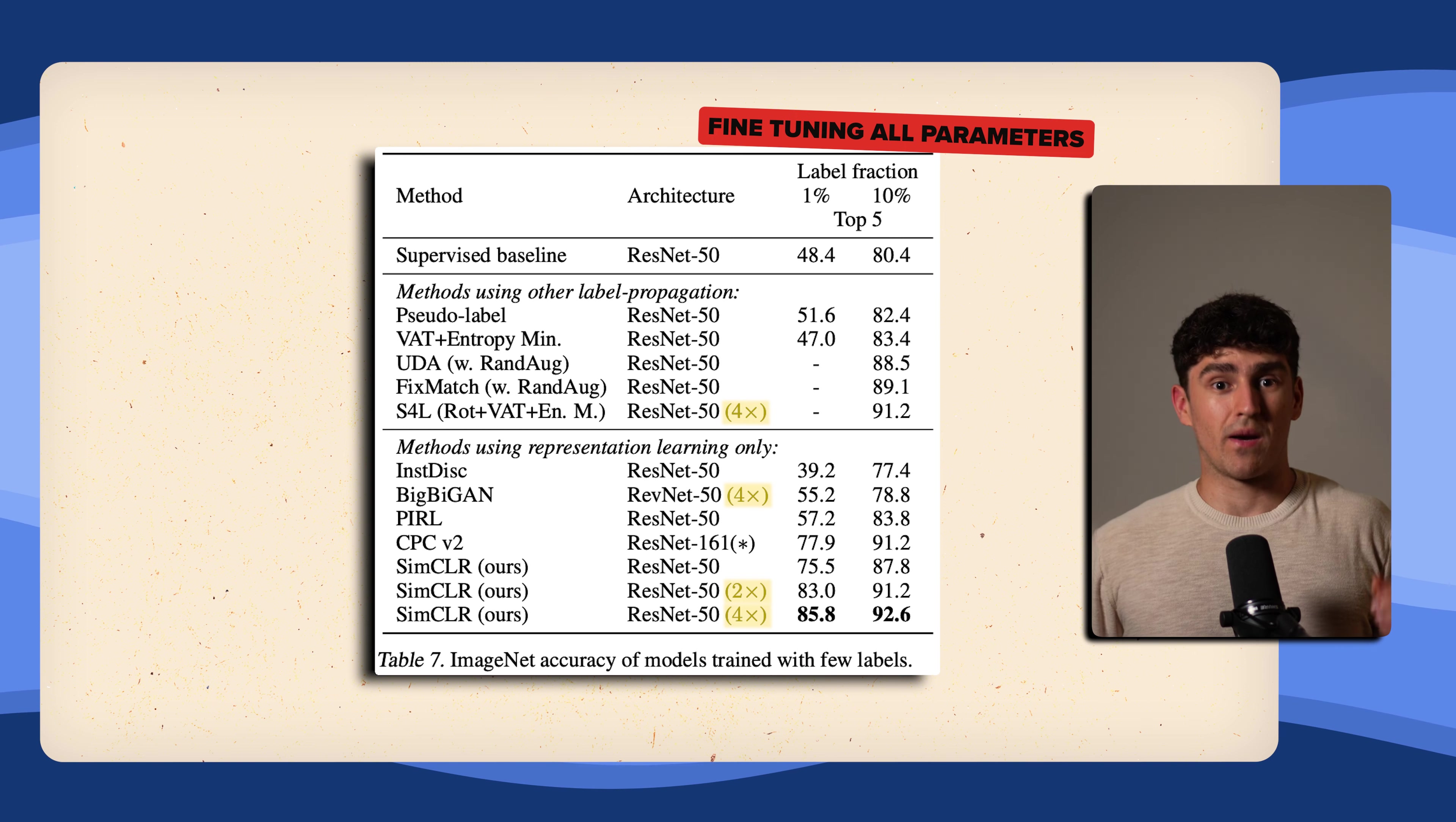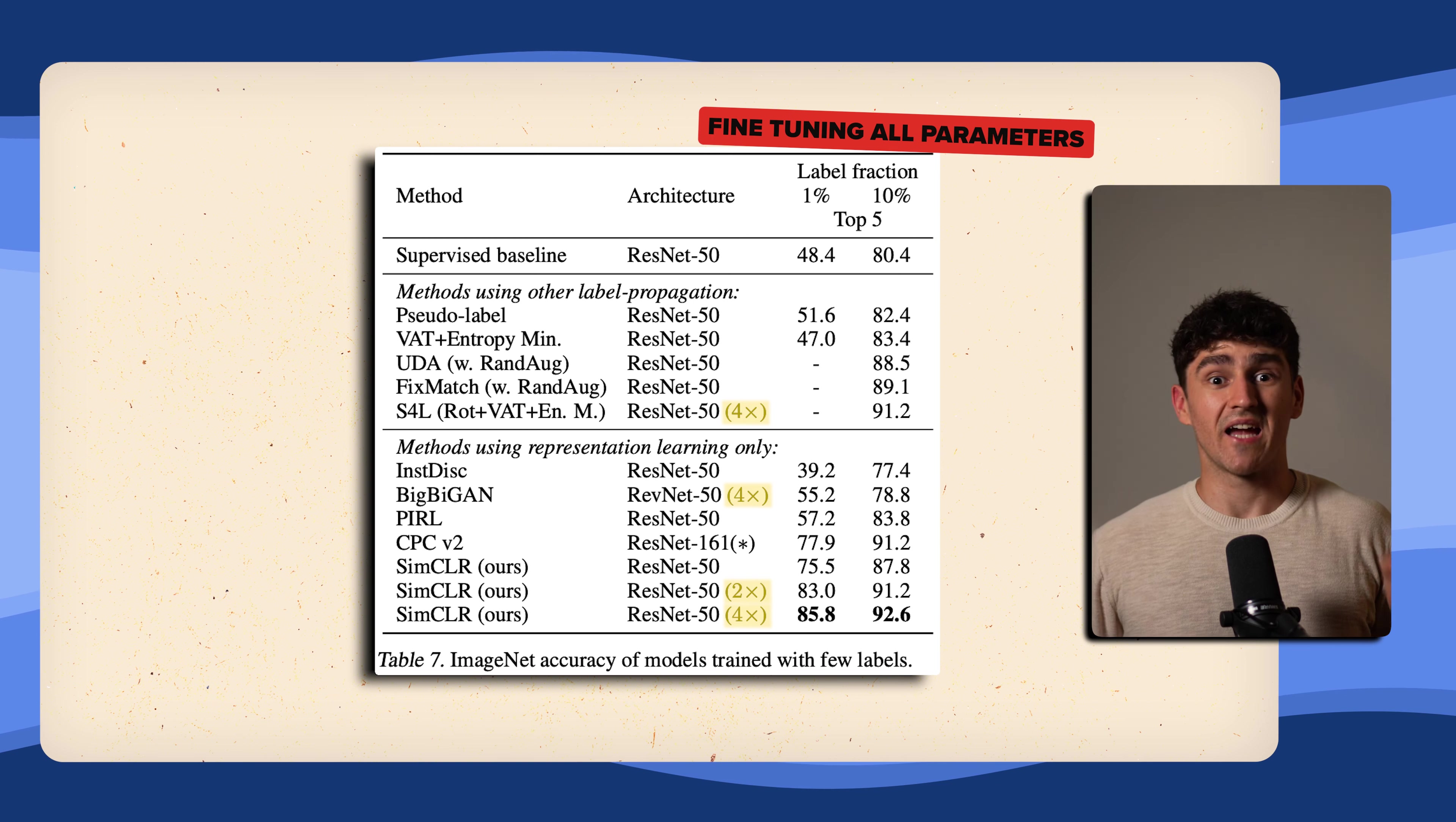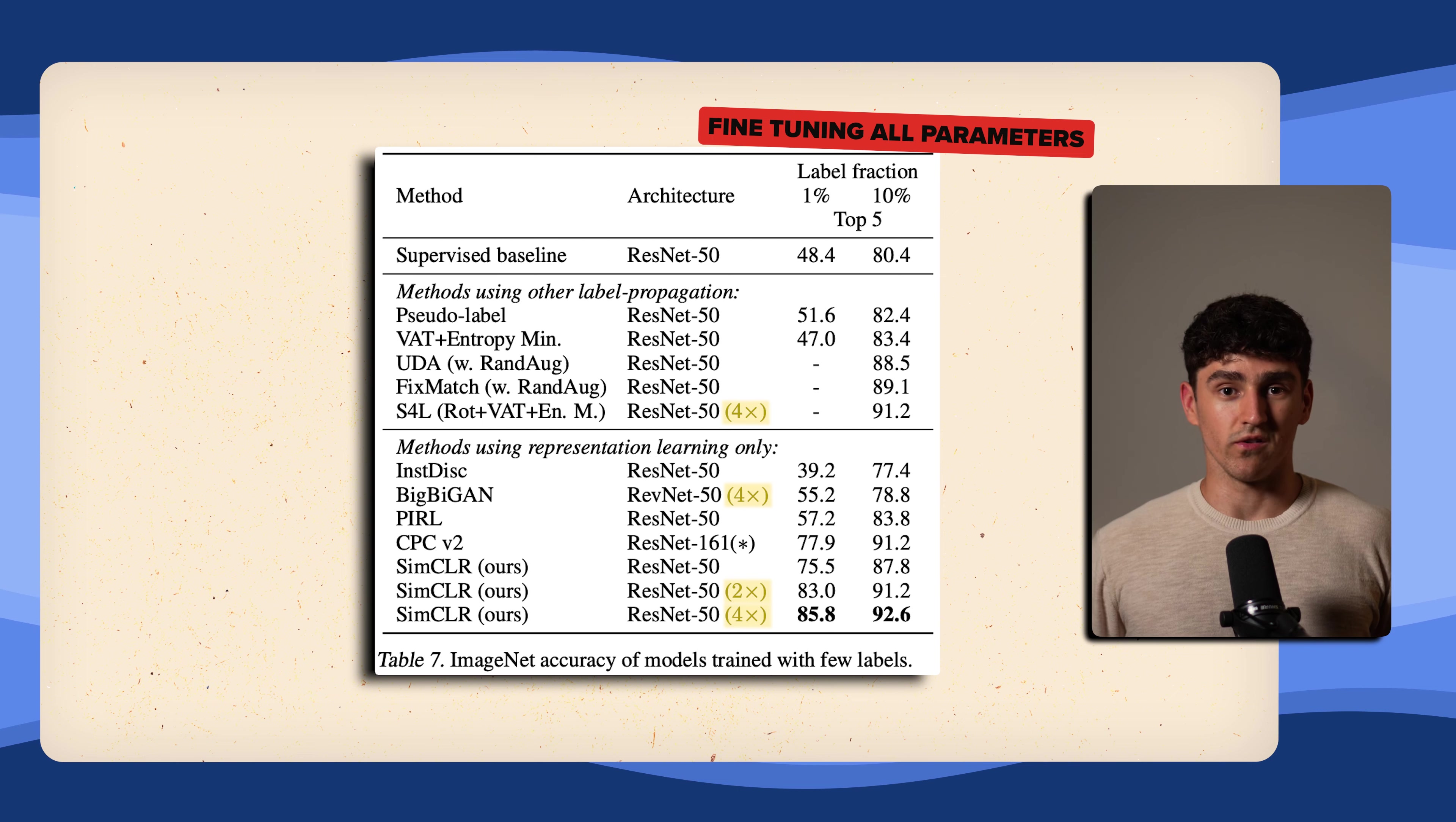After pre-training all parameters of the model, meaning the new prediction head and the pre-trained feature extractor, the model is fine-tuned on 1% and 10% of the ImageNet dataset respectively. The supervised model is also fully trained, but only on that 1 and 10% of the data. All baseline models, the fully supervised trained model especially, perform worse than SimCLR.